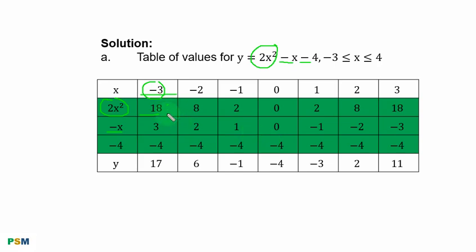We simply add: 18 plus 3, that is 21 minus 4, you have 17. 8 plus 2, 10 minus 4, you have 6, and so on. This is the complete table of values for the given equation. Next is to plot the graph of the given equation.